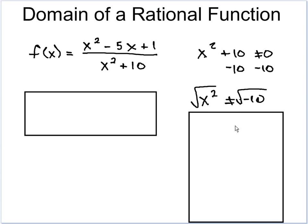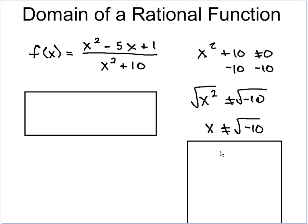We have x² + 10 cannot equal 0. We subtract the 10 from both sides. So we get x² cannot equal -10. We take the square root. And as you notice, it says x cannot equal the square root of -10. We can't take the square root of a negative number. That gives you a complex number, an imaginary number.